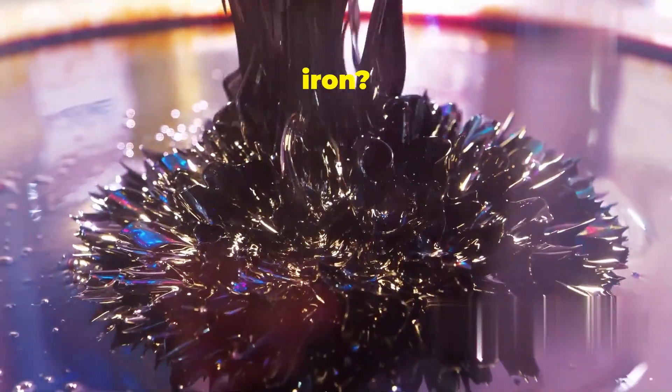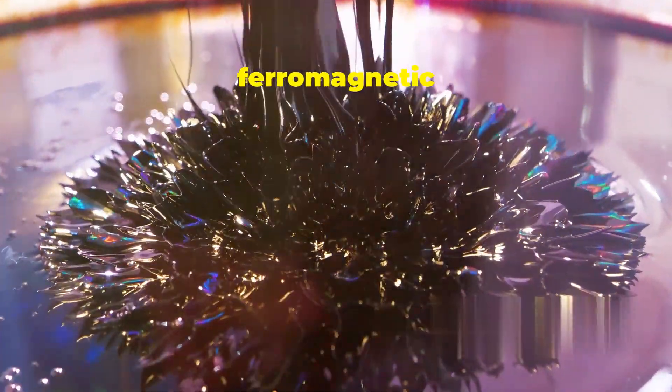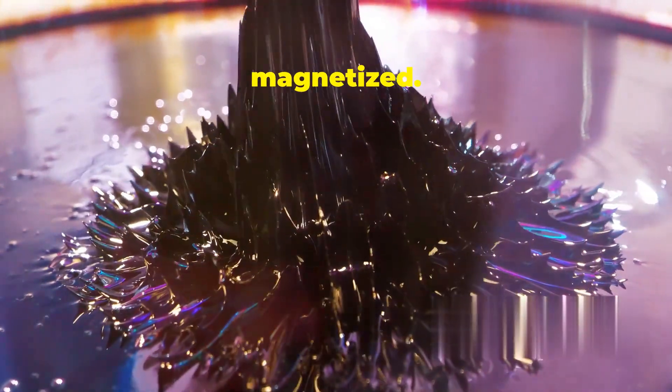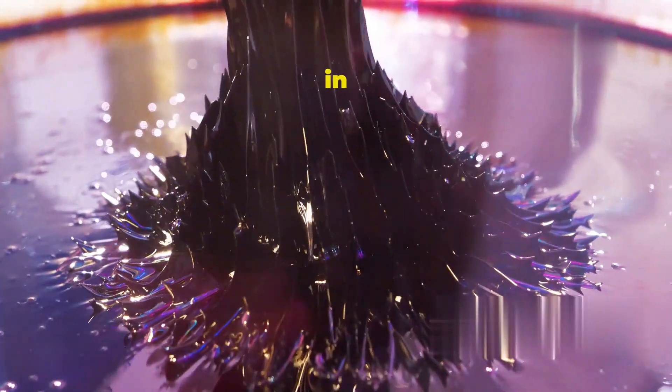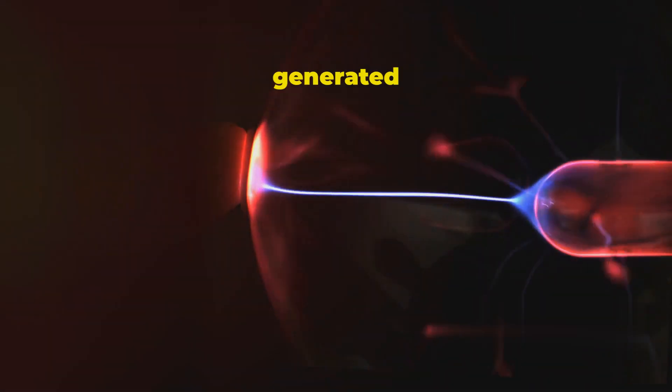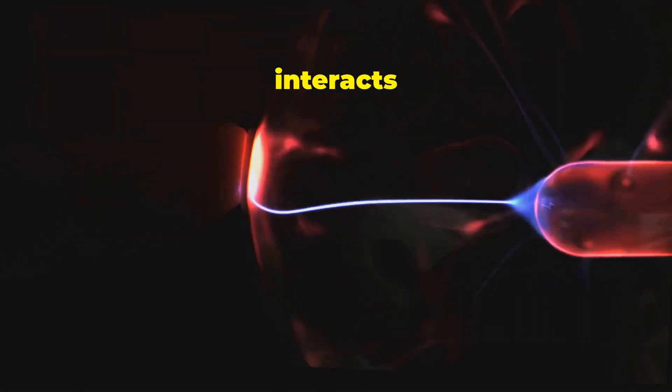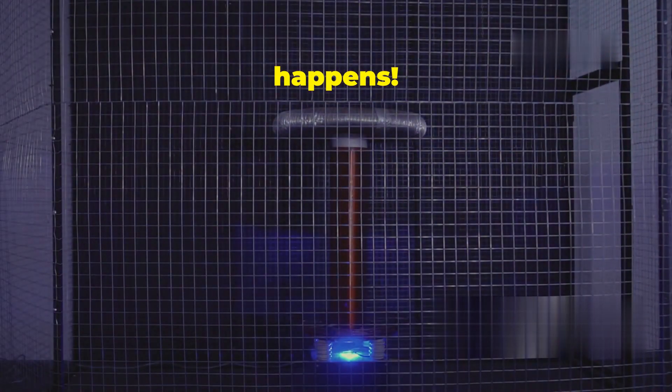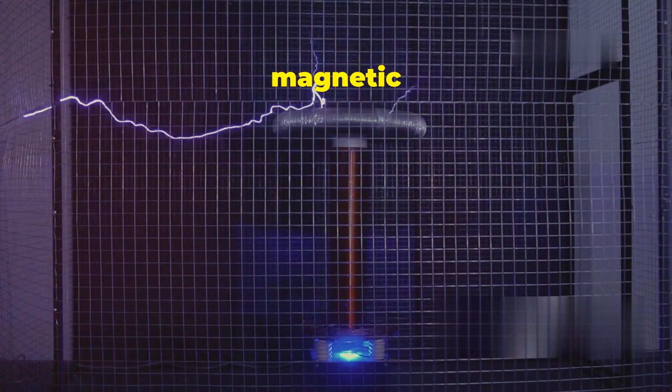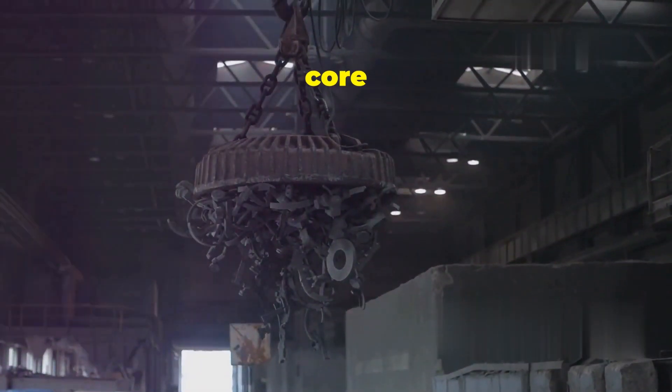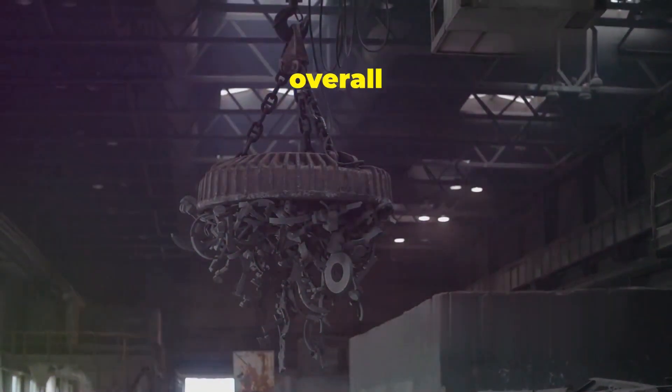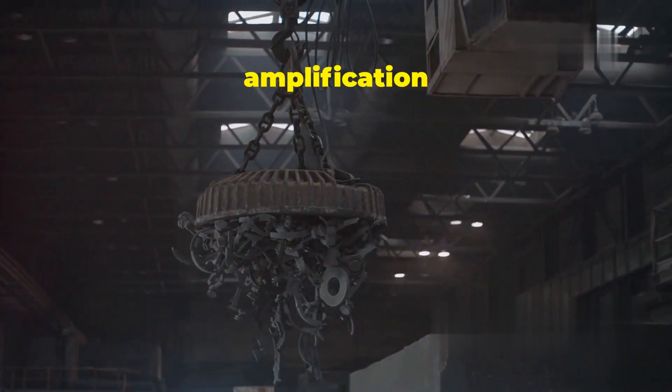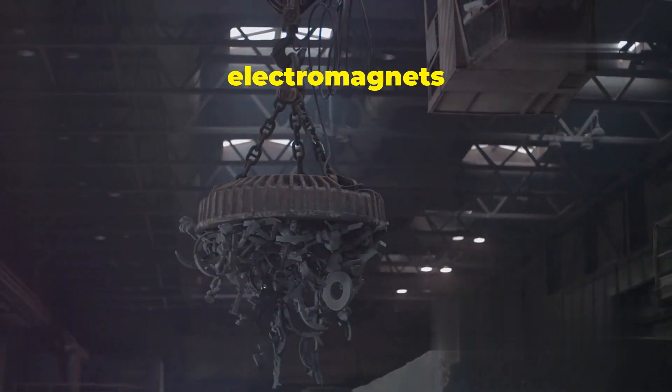Why iron? Because iron is a ferromagnetic material, which means it's easily magnetized. This property makes it ideal for use in electromagnets. When the magnetic field generated by the wire coil interacts with the iron core, something incredible happens: the iron core becomes magnetized, greatly amplifying the overall magnetic field strength of the electromagnet. This amplification is what makes electromagnets so powerful.